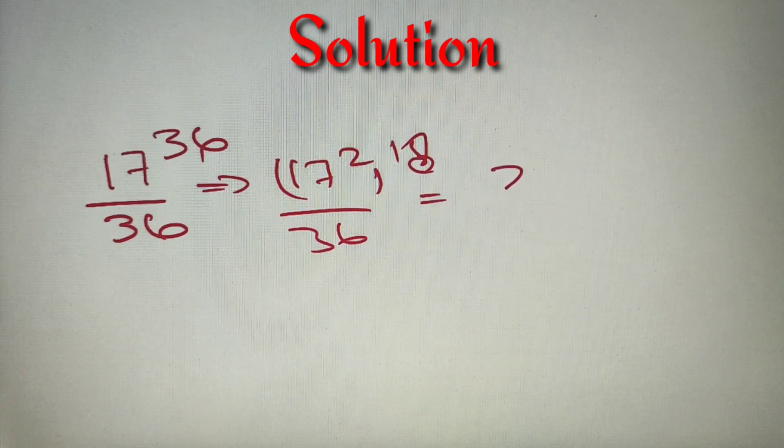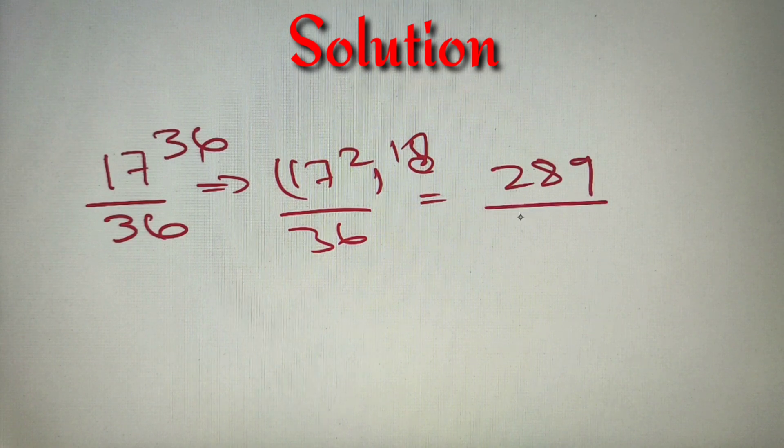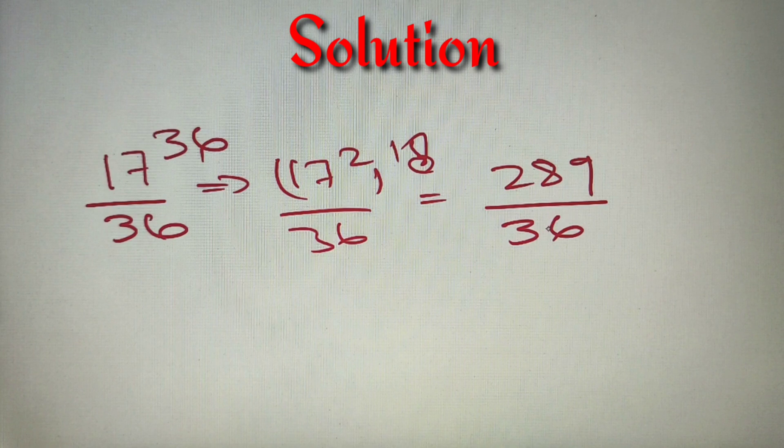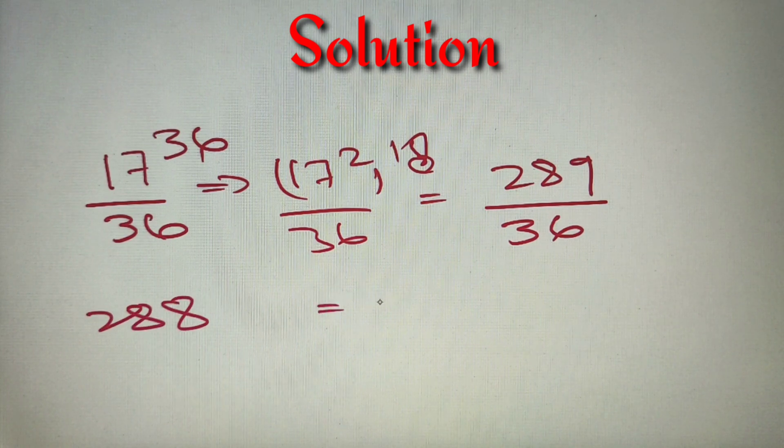We know that 17 square is equal to 289, so we have to find the remainder of 289 by 36. We know that 36 into 8 is equal to 288, so the remainder when 289 is divided by 36 is equal to 1.